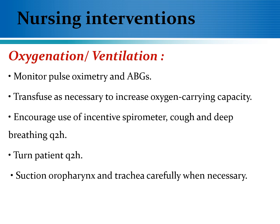Regarding the nursing intervention to improve the patient's oxygenation and ventilation: monitor pulse oximetry and arterial blood gases, provide IV infusion and blood transfusion, provide incentive spirometry, and encourage the patient to perform breathing and coughing exercises every two hours. Schedule your patient's turning, and perform tracheal suctioning and removal of excess secretions, but be cautious during tracheal suctioning because of the patient's higher bleeding tendency, which may further traumatize the tracheal mucosa.